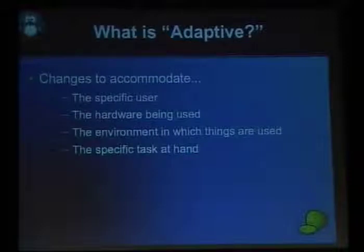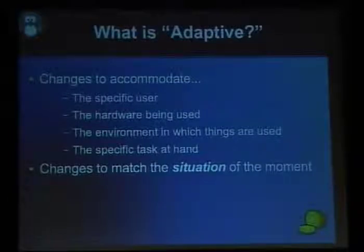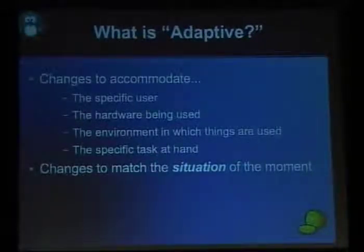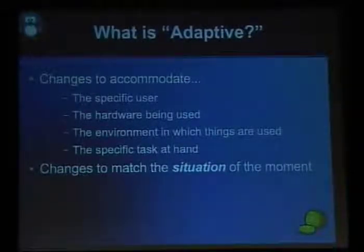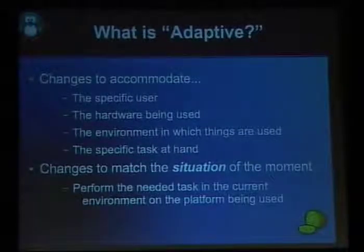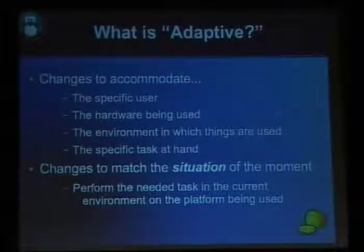An adaptive user interface should change to match the situation of the moment. Once you start to get all this in mind when designing — whether you're the UI designer, the user, the internal implementer of an API, or working in a web app — the backend may need to provide more context so the middle layer, GUI layer, and Ajax layer can do the helpful thing. The goal is to perform the needed task in the current environment and on the platform being used.